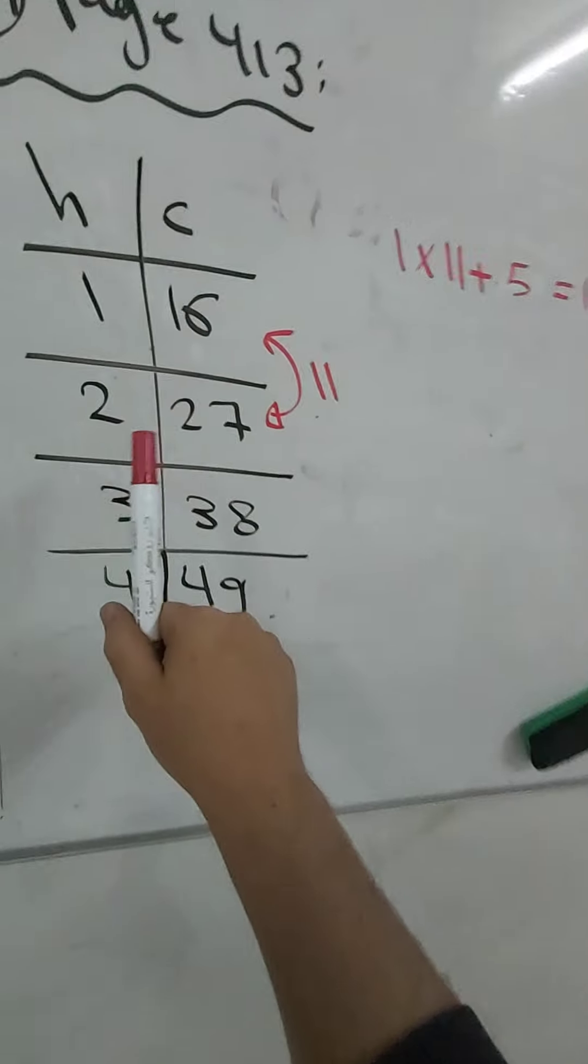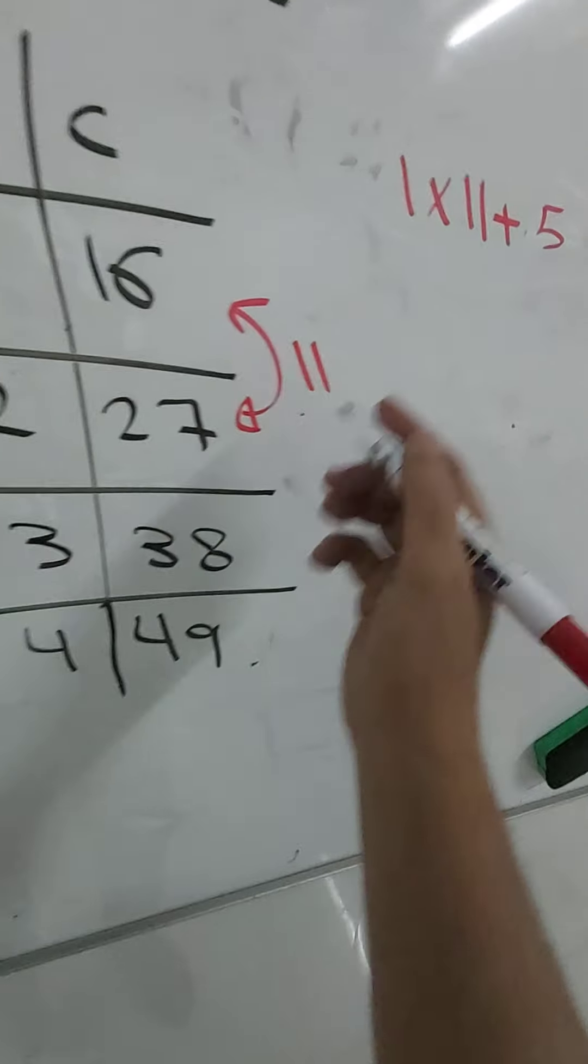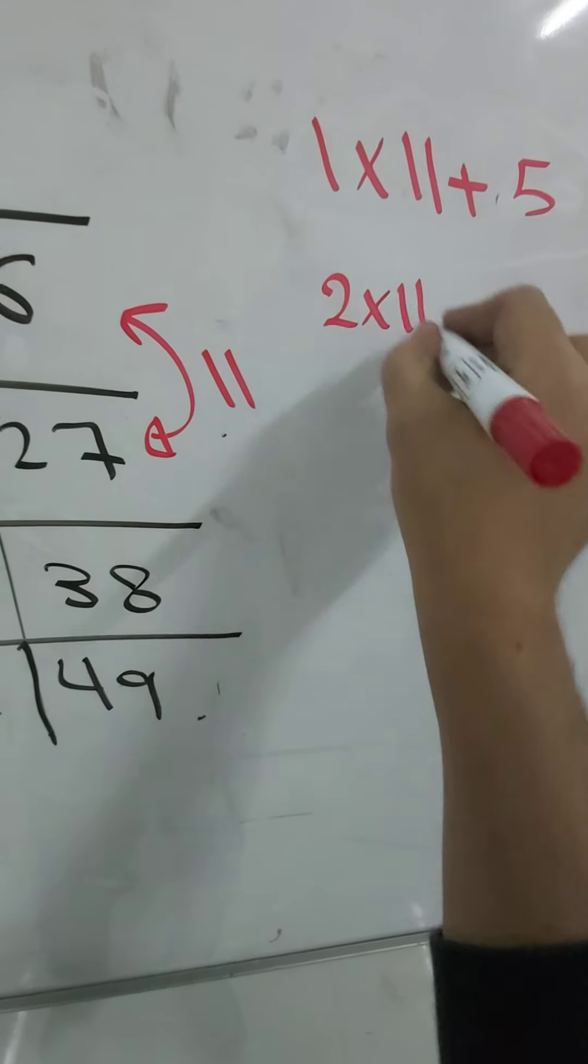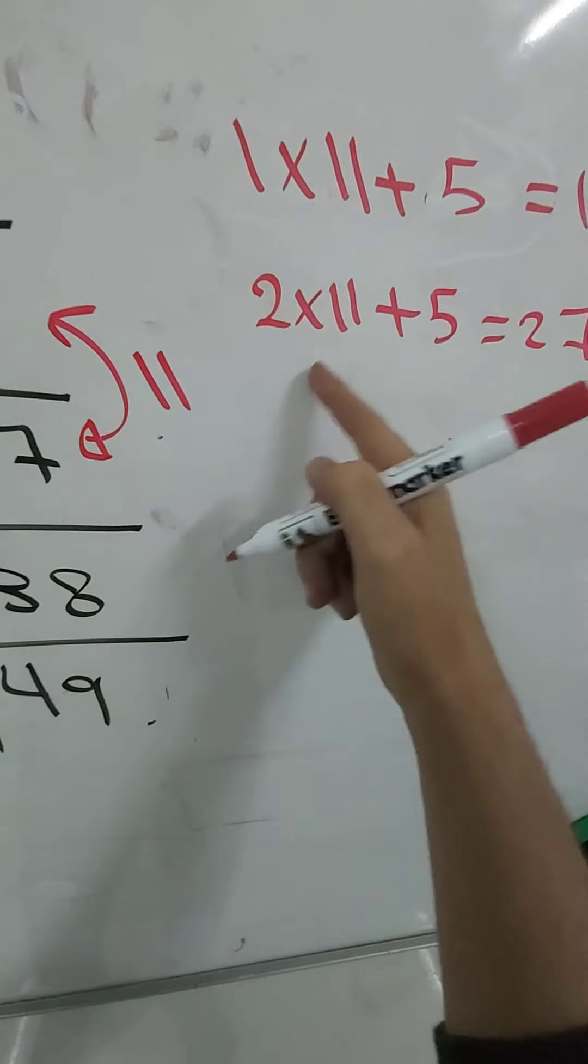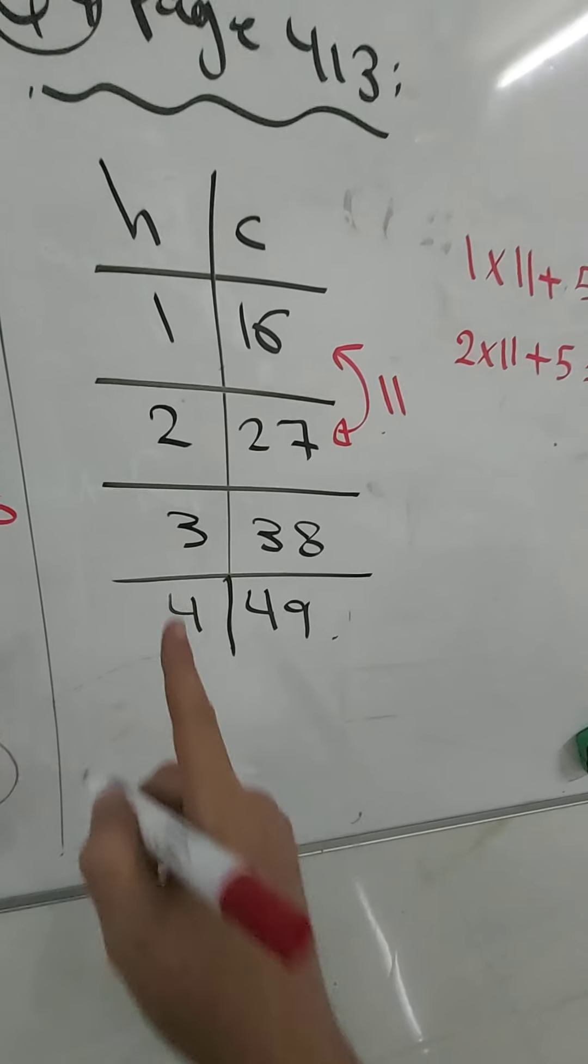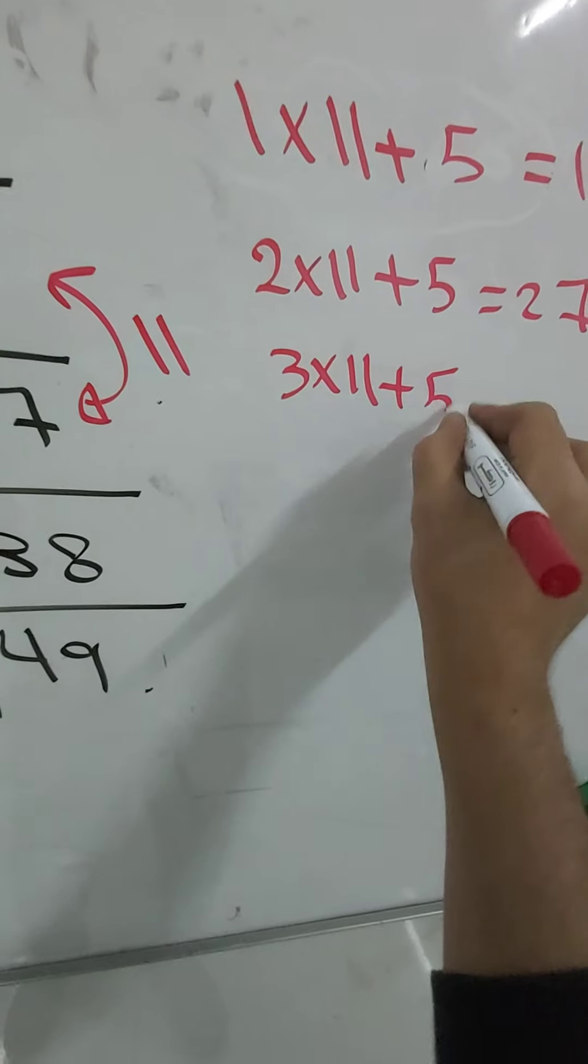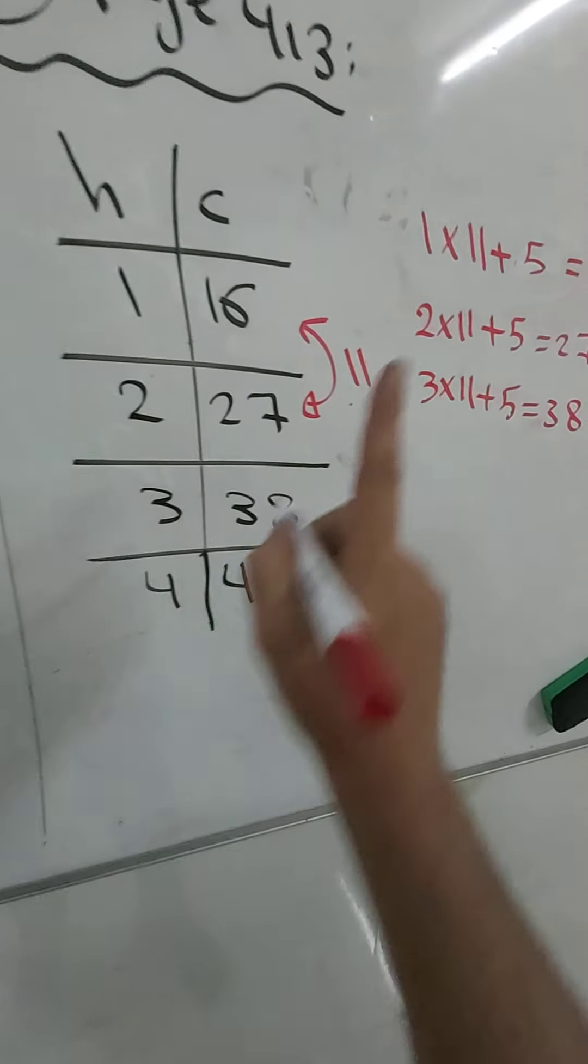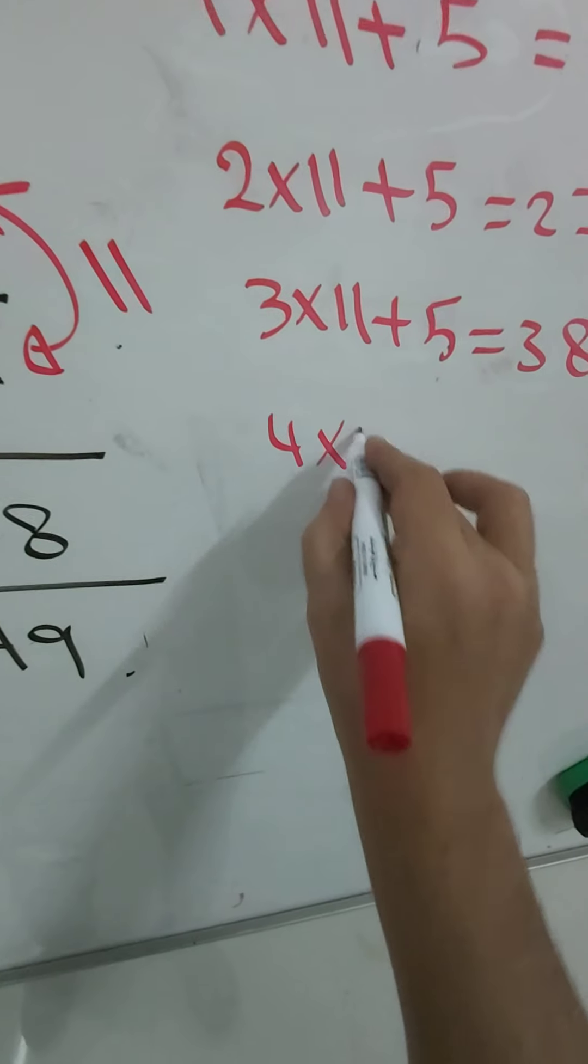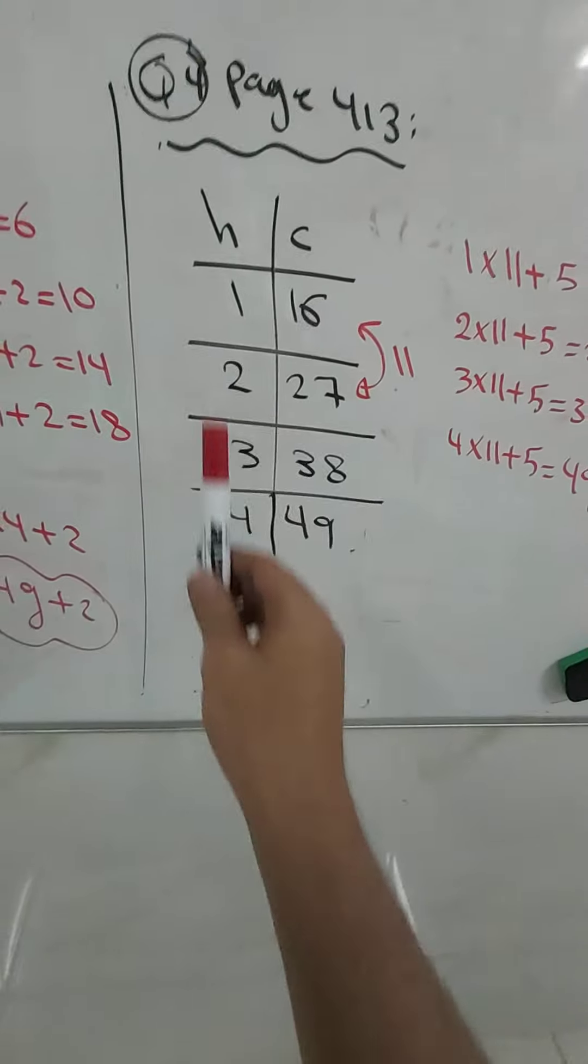Now two multiply 11 plus what to be 27? Two multiply 11 plus also 5 to be 27. 22 plus 5 is 27. Three multiply 11 plus 5, it will be 38. Four multiply 11 plus 5, it will be 49.